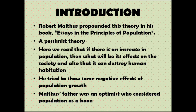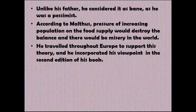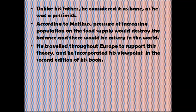Malthus's father was an optimist who considered population as a boon. But unlike his father, Malthus considered it as a bane, as he was a pessimist. According to Malthus, the pressure of increasing population on the food supply would destroy the balance and there would be misery in the world. For this, he travelled throughout Europe to support his theory and incorporated his viewpoint in the second edition of the same book.